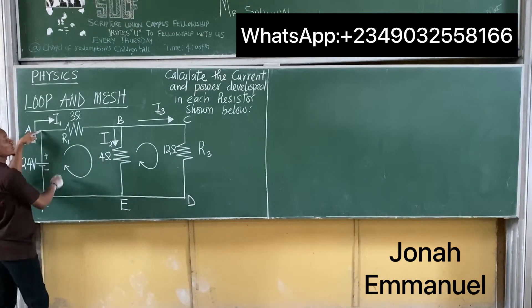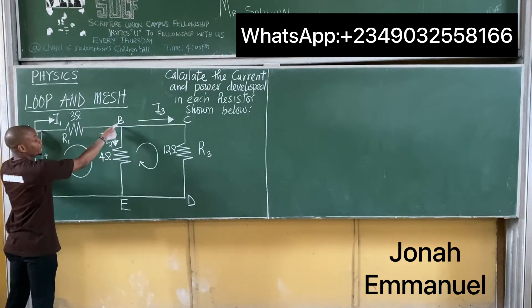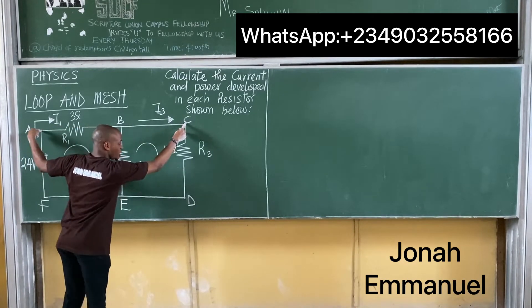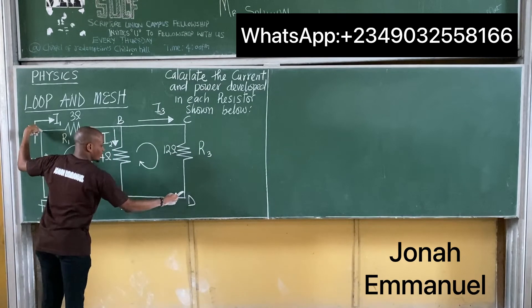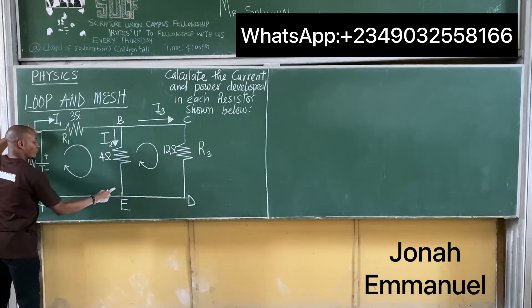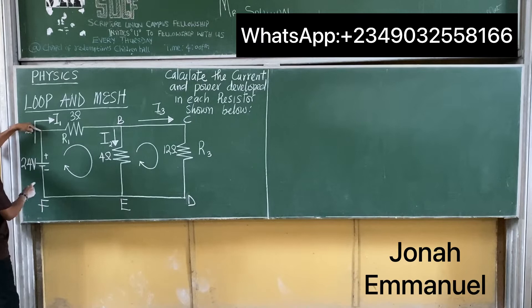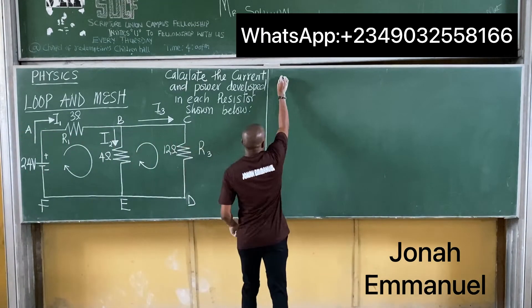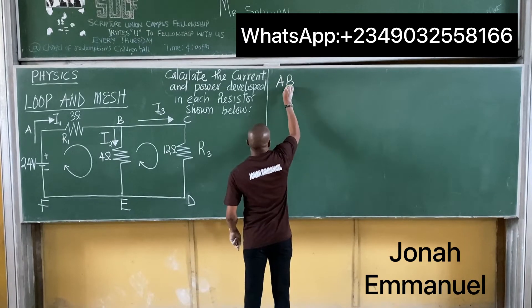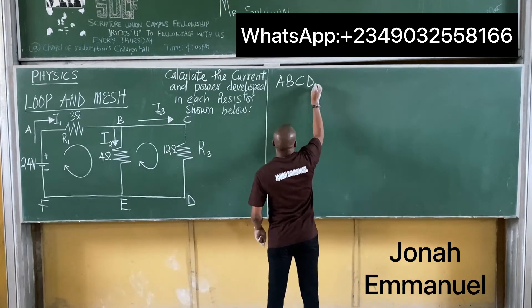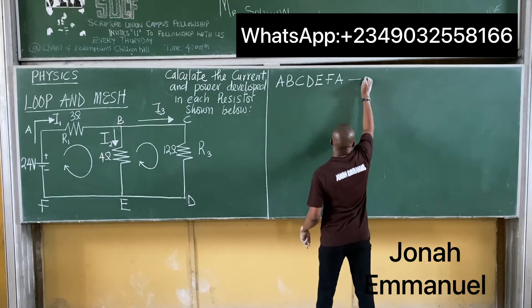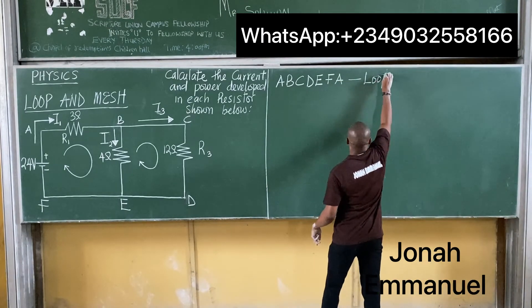This one goes from A to B, from B to C, from C to D, from D to E, from E to F, from F to A. That becomes a loop. So I have A, B, C, D, E, F, A. This one here is a loop.